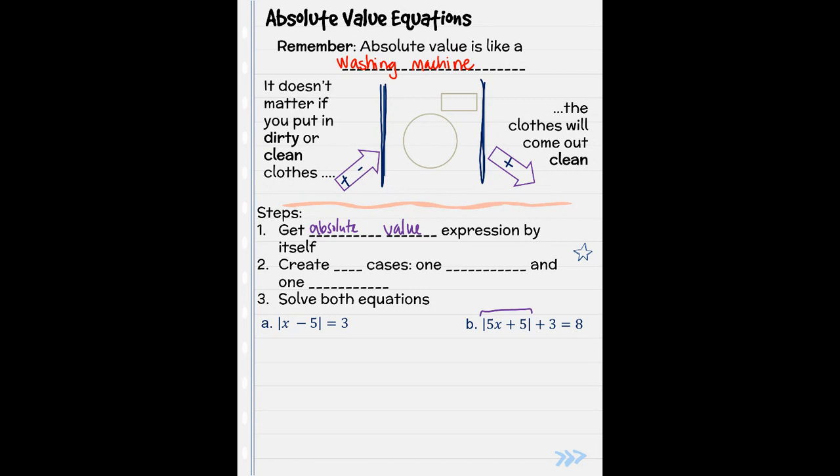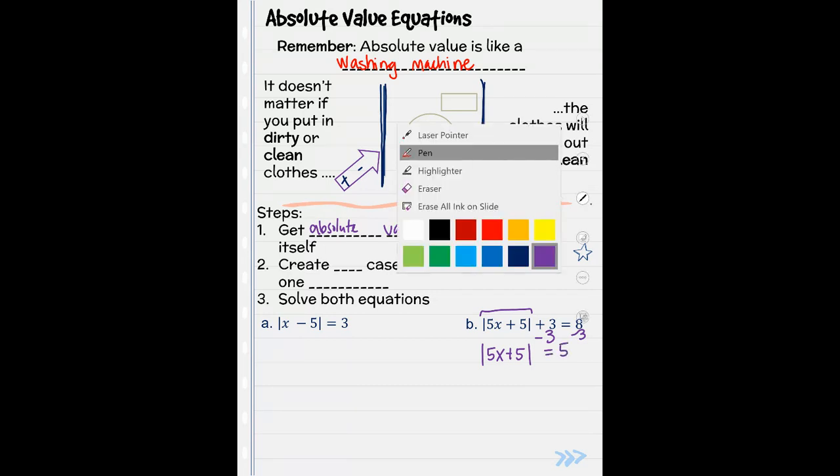So if we look at B, it's not by itself. It's got an added three to the outside of it. So let's get rid of that added three by doing the opposite, subtracting three from both sides. So then we have absolute value of 5x plus 5 equals 8 minus 3 is 5.